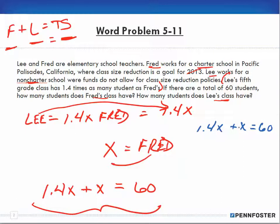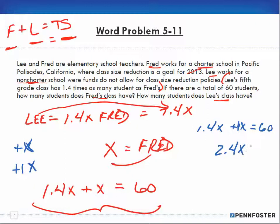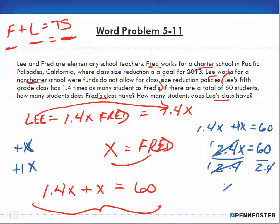Now I'm combining like terms: 1.4X plus X. Remember, X is understood to be plus one X. So 1.4 plus 1 gives us 2.4X, and that equals 60. Now we divide both sides by 2.4 — what I do for one side, I do for the other. The 2.4 cancels out, leaving X on the left, and 60 divided by 2.4 on the right.